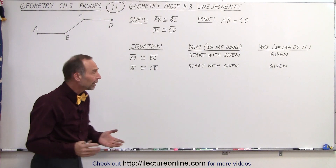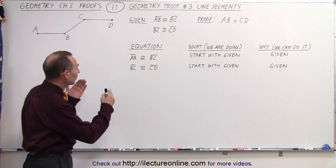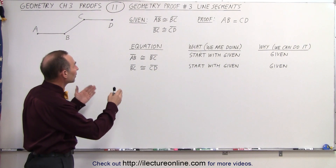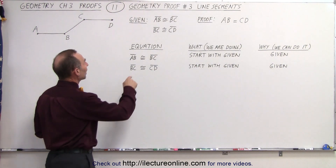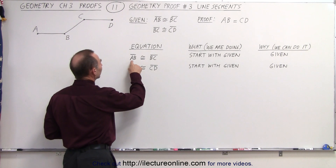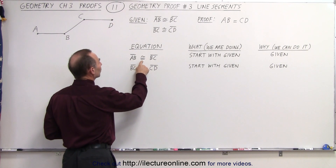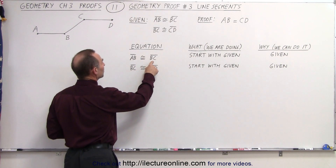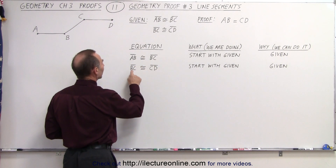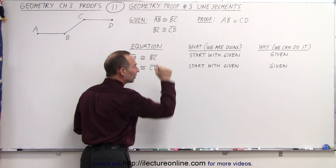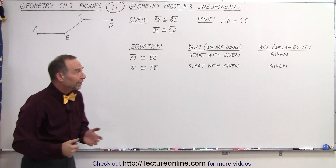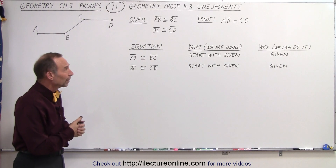It's always a good place to start when we write down what is given. So we're going to write down that line segment AB is congruent to line segment BC, and line segment BC is congruent to line segment CD, because that's where we want to start with what they gave us.